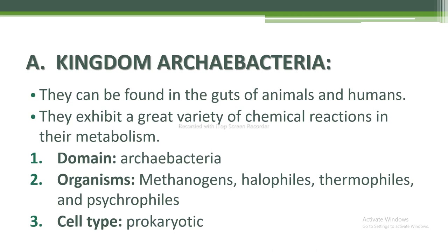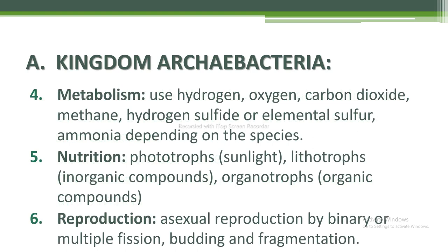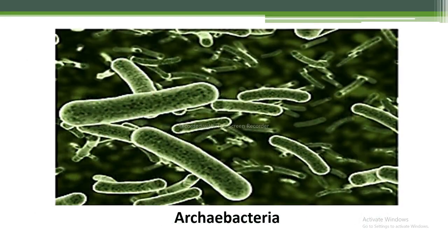Cell type is prokaryotic. Metabolism uses hydrogen, oxygen, carbon dioxide, methane, hydrogen sulfide, or elemental sulfur and ammonia, depending on the species. Nutrition: phototrophs use sunlight; lithotrophs use inorganic compounds; organotrophs use organic compounds. Reproduction: asexual reproduction by binary fission or multiple fission, budding, and fragmentation. This is Archaebacteria as shown in the figure.